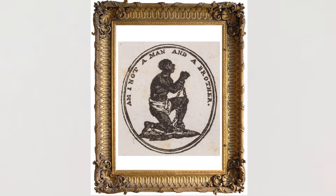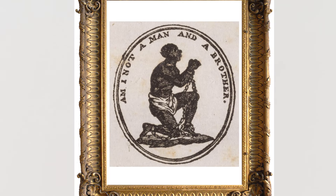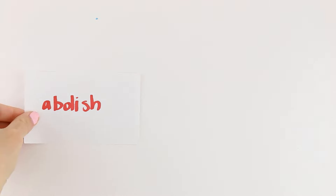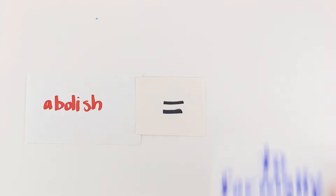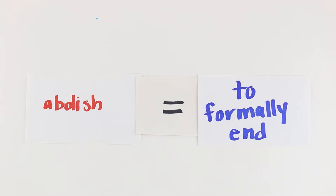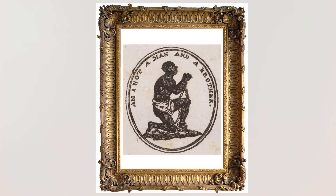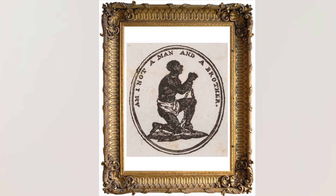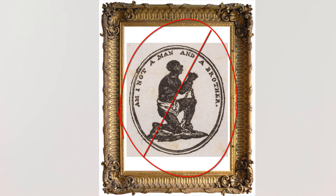Next, the 13th Amendment abolished slavery. Abolish means to formally put an end to. So the 13th Amendment officially ended slavery within the United States.